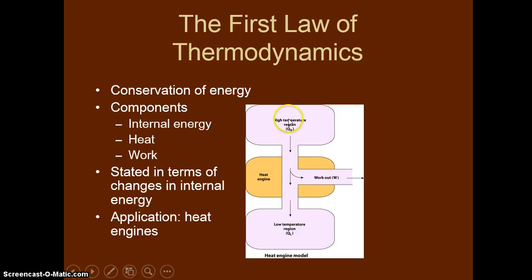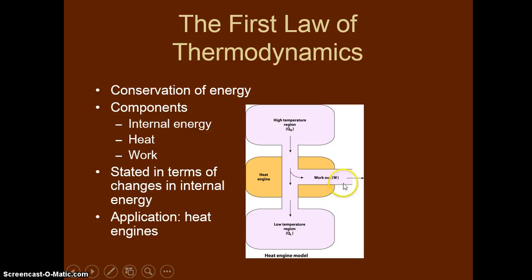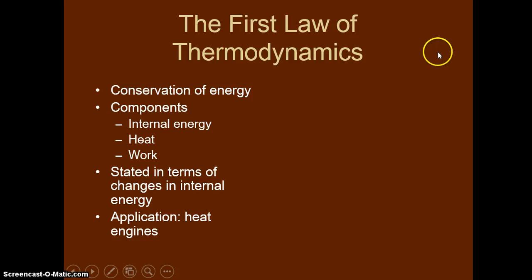The first law of thermodynamics says that the heat at a higher temperature minus the heat at the lower temperature is exactly equal to the work you get out. About 200 to 250 years ago, people figured out that this natural process of heat flow — when heat goes from high temperature to low temperature — allows for a device called a heat engine where you can tap off some useful work. The work equals Q high minus Q low. That's the first law of thermodynamics, and it's true for one cycle of the heat engine.